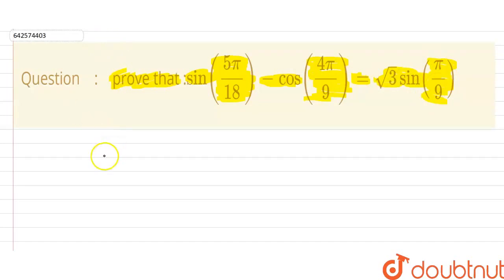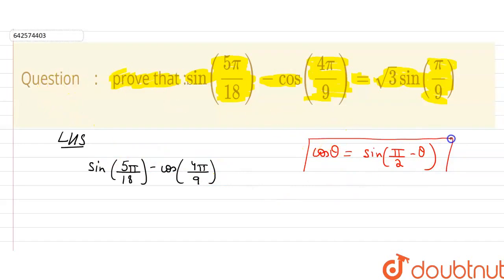So we have to prove LHS is equal to RHS. Let's take our LHS first. It is sin 5π/18 minus cos 4π/9. We know a formula that cos θ is equal to sin of π/2 minus θ. This is the formula we know. So let's use it in the given equation.